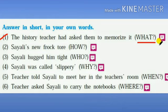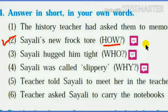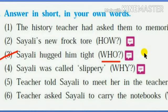The answer is: The history teacher asked them to memorize the causes and effects of the Battle of Panipat. The second sentence is: 'Sile's new frog tore' — and the WH word is 'How'. So the question is: How did Sile's new frog tear? The answer is: Sile fell tumbling down from the stairs and her frog was torn at the seams.